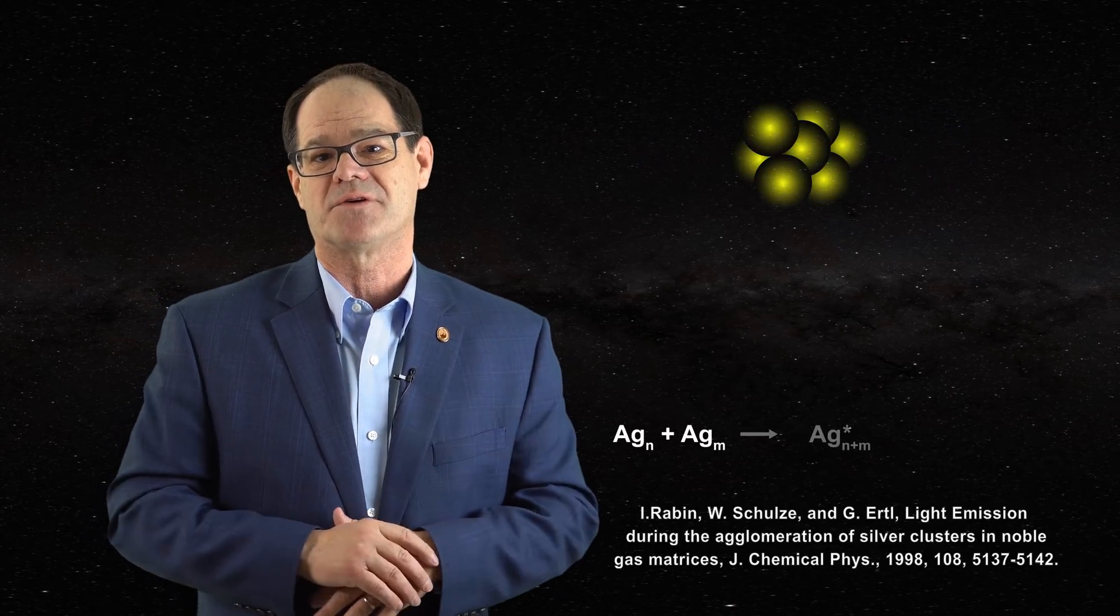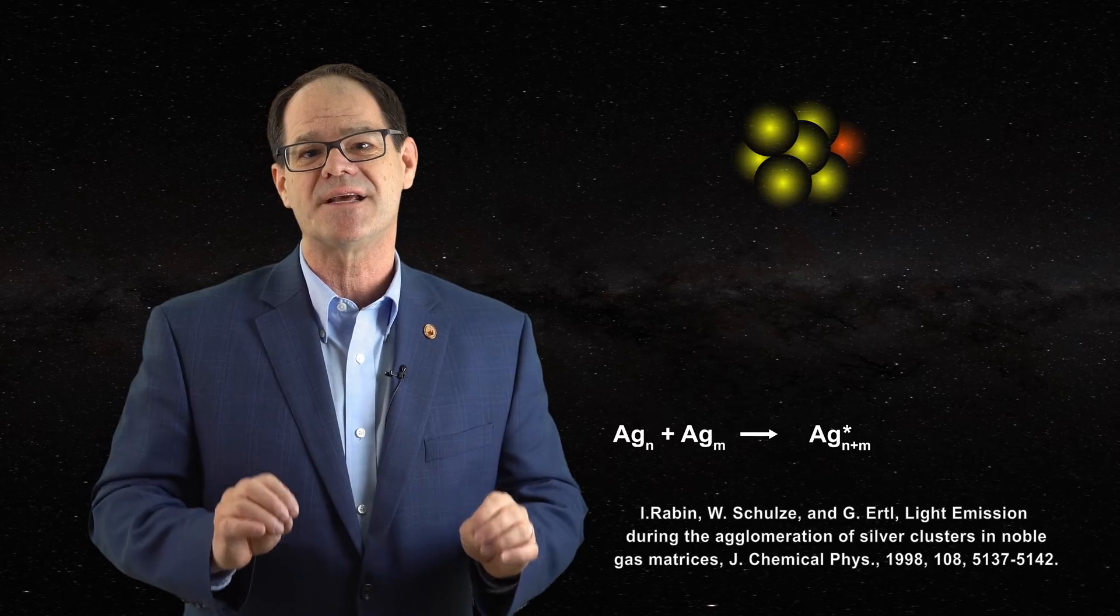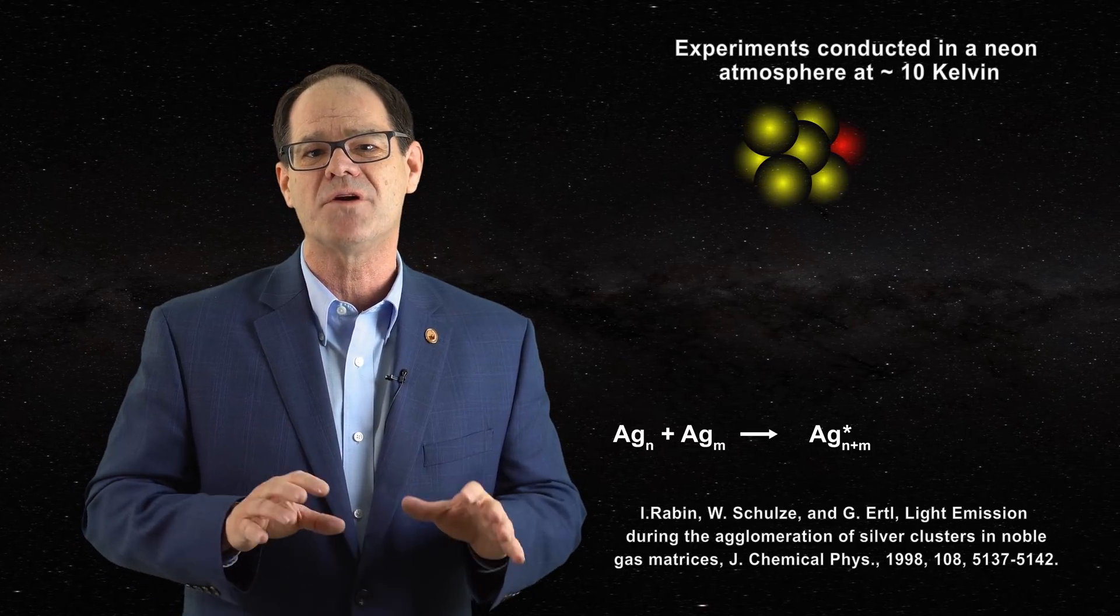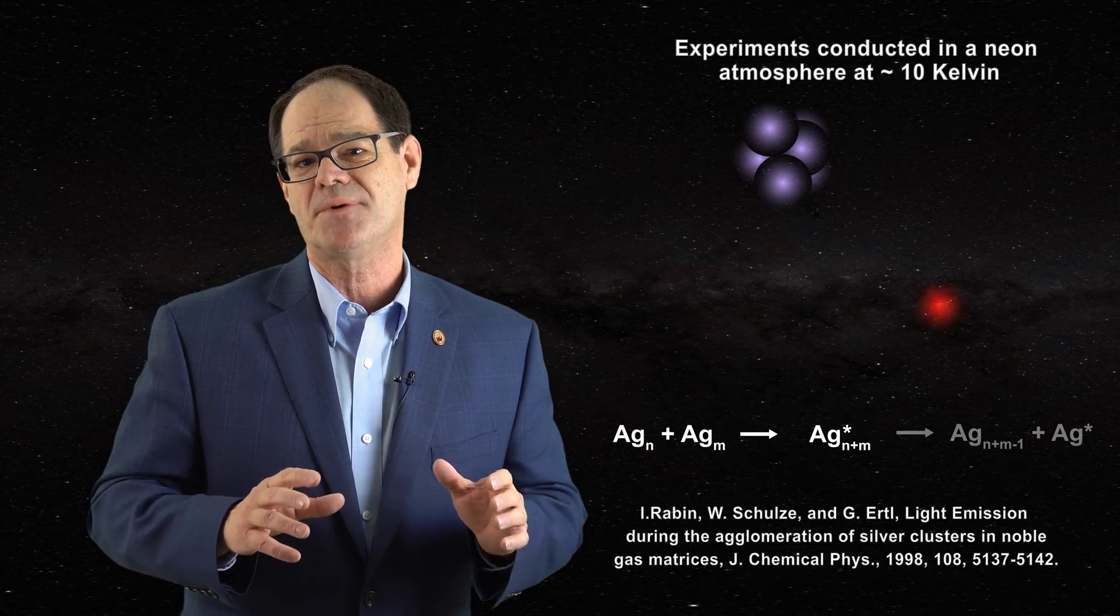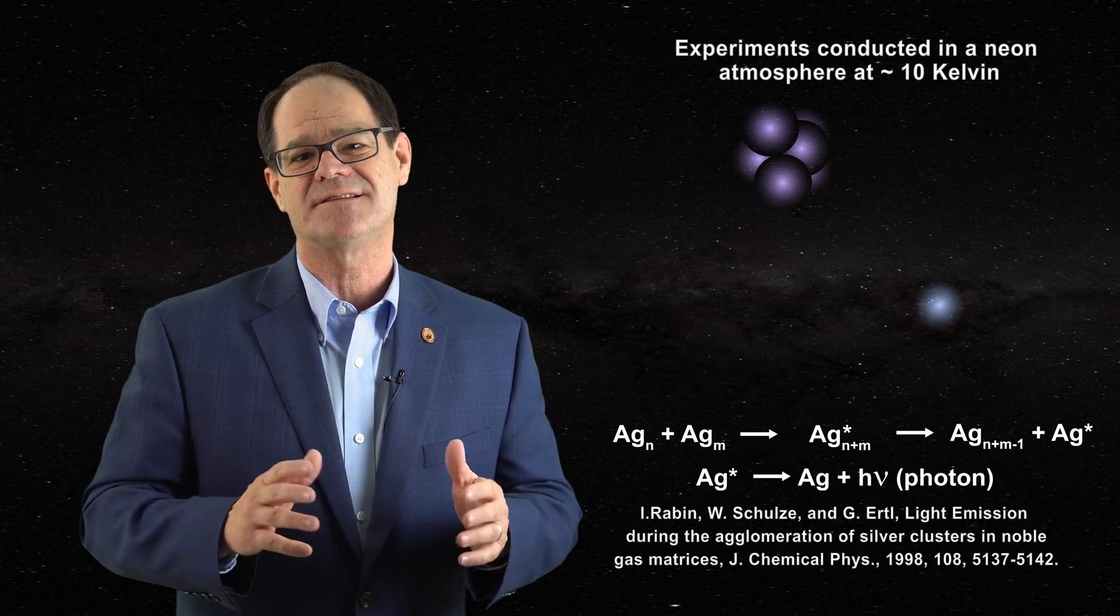The fact that the corona is not in thermal equilibrium is one of the take-home messages from the video on the corona where the experiments with silver clusters in the laboratory were discussed. You recall that the silver clusters were sitting at temperatures of 10 Kelvin but were emitting lines which could be interpreted by astronomers as corresponding to temperatures in the thousands of Kelvin.